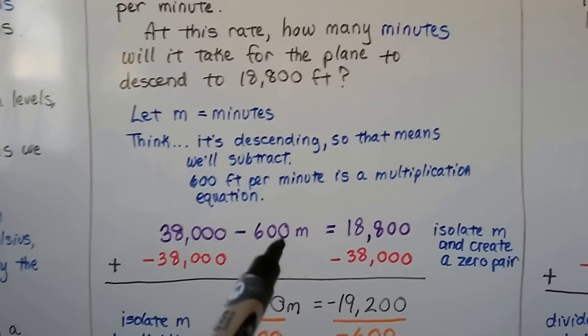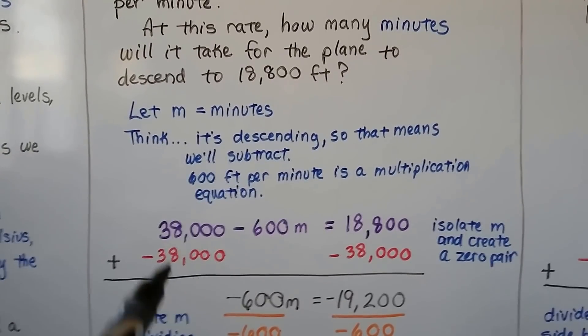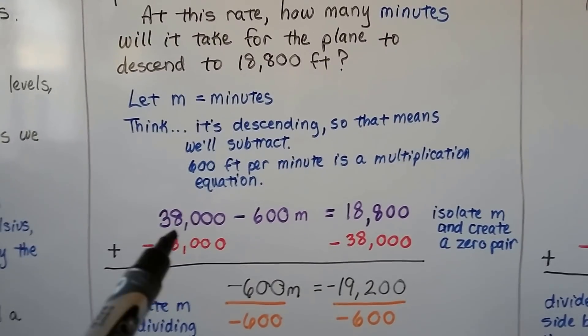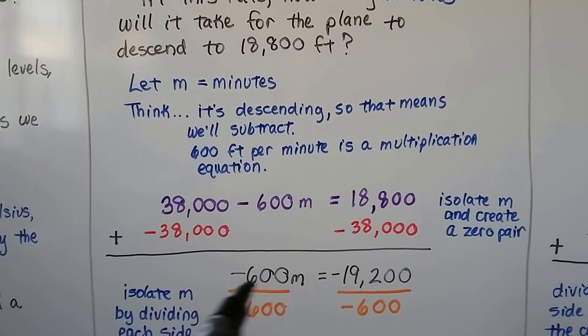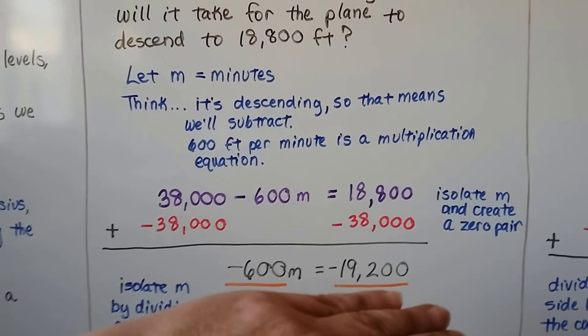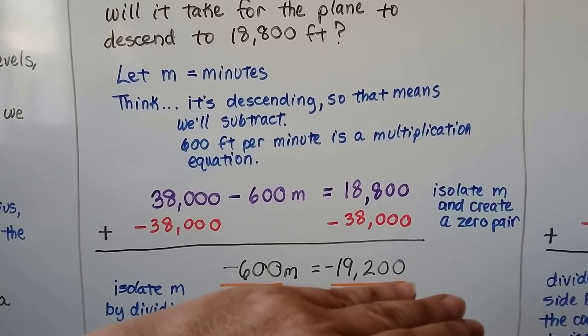We can isolate this m and create a zero pair by adding a negative 38,000 to both sides of the equation. It creates a zero pair here, and all we're left with is negative 600m on this side and negative 19,200 on the other side.